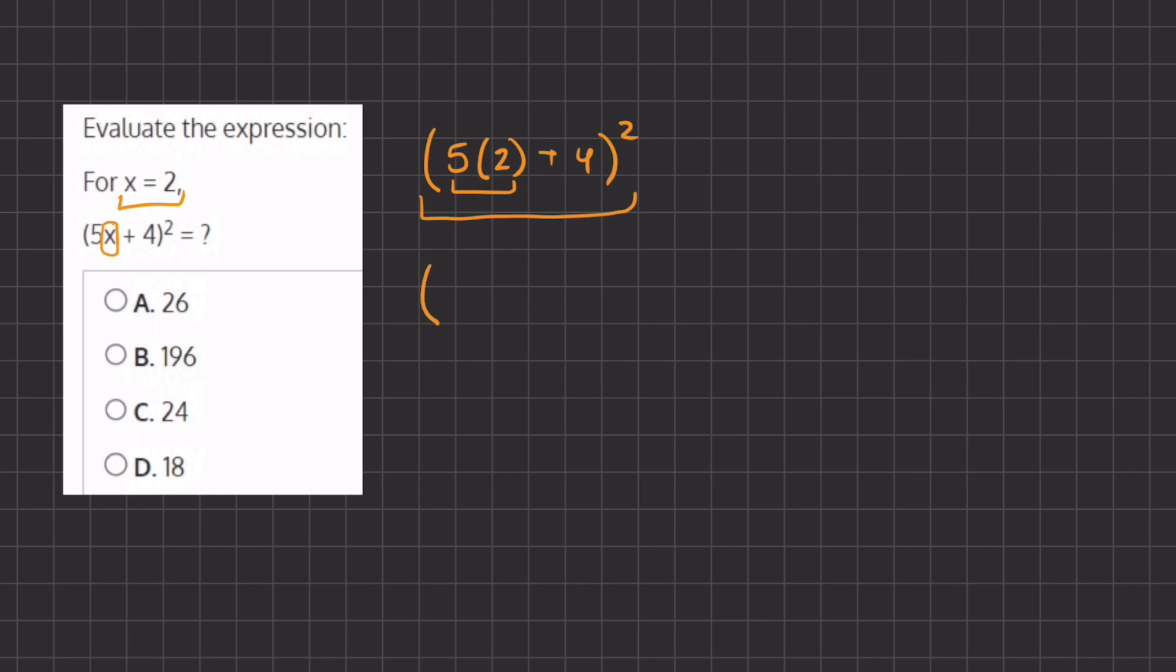So in our inner parentheses we have 5 times 2 which is 10 plus 4 all squared. Now if we simplify what's inside the big parentheses we have 10 plus 4 which is 14 and all of this is squared.